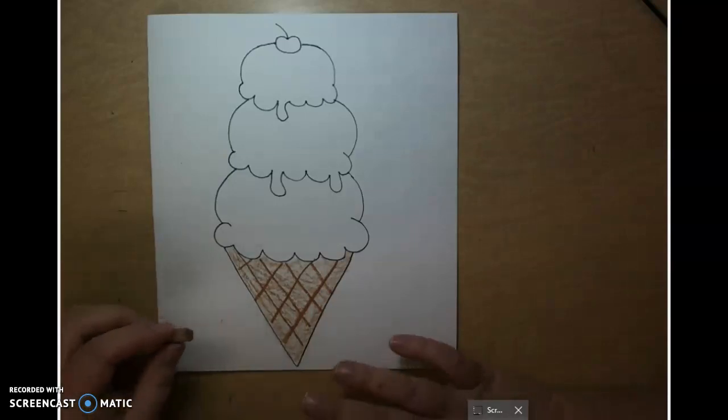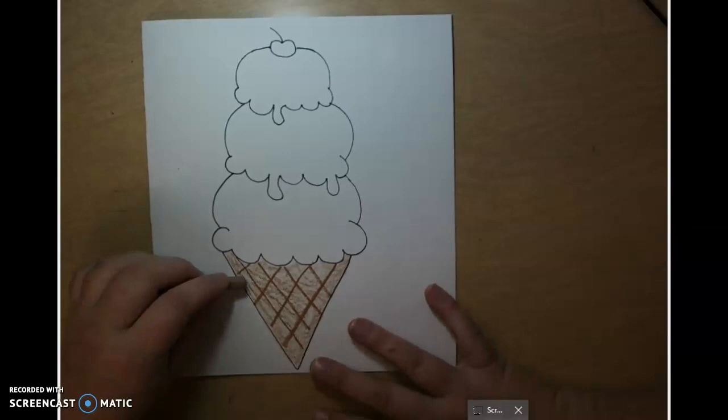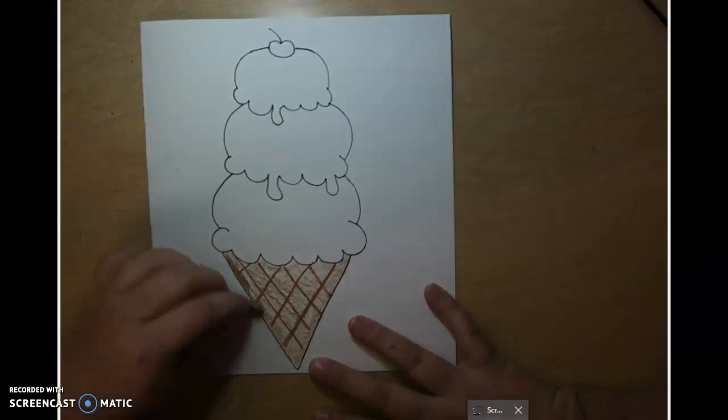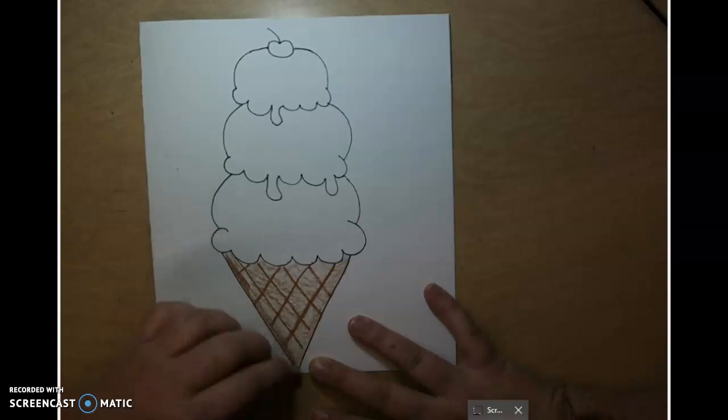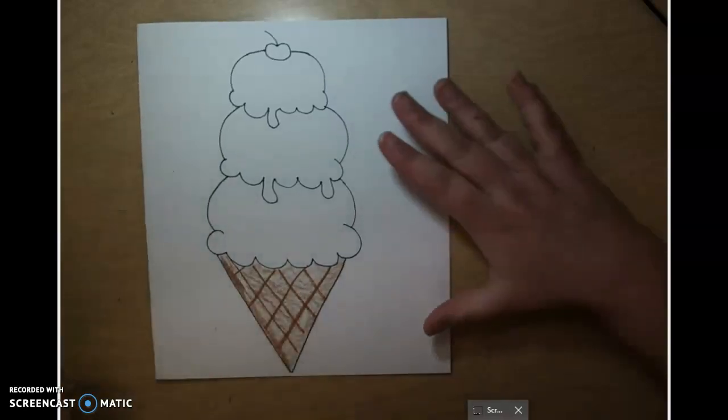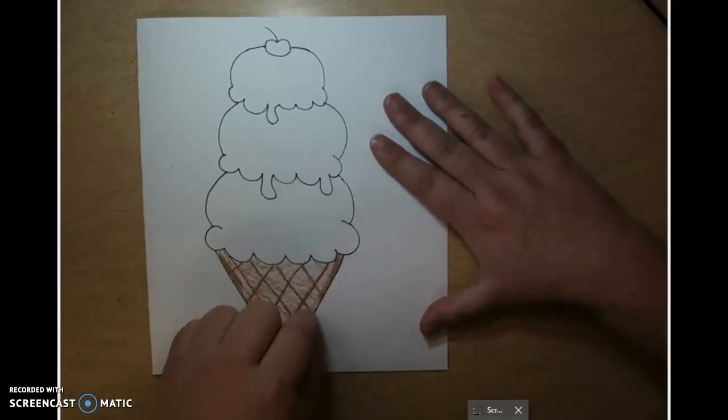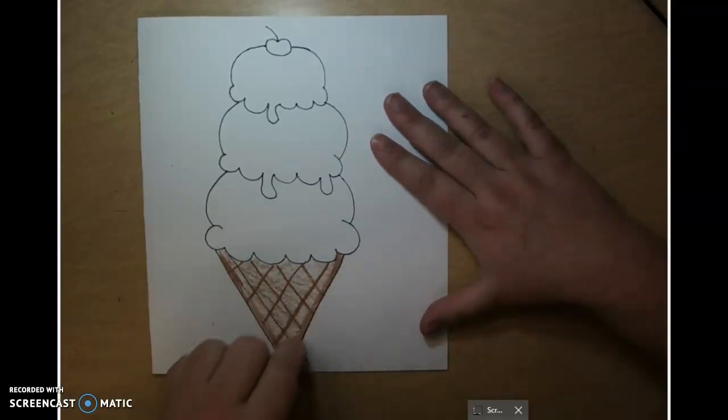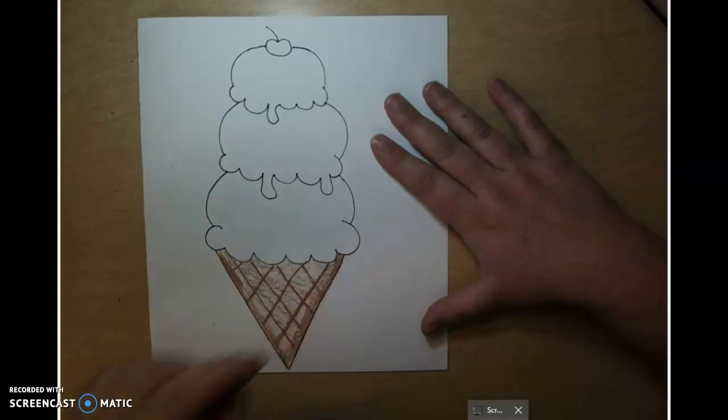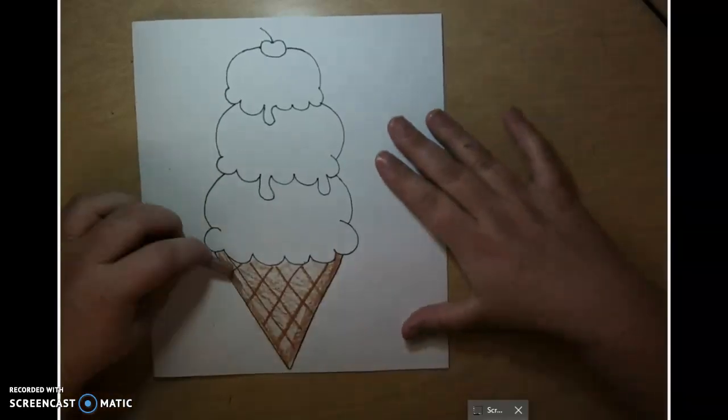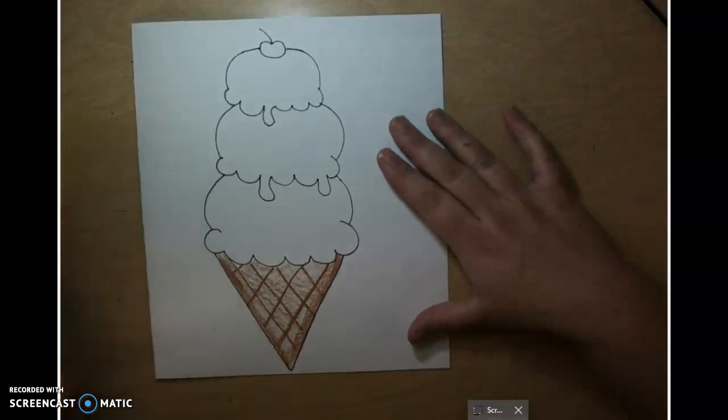But right now, I want to add some value to the cone. I want to make it look more 3D. And here's a trick, boys and girls. We're going to press a little bit harder on the sides. To make it look a little bit more 3D. Just next to the line. Now, take your time. And there we have it.